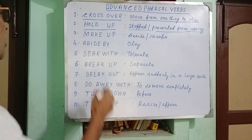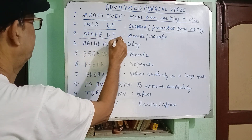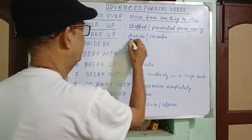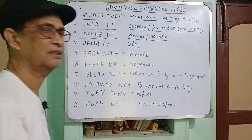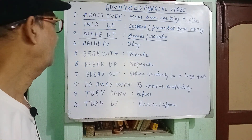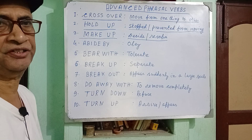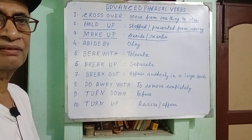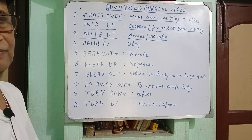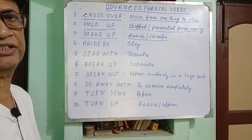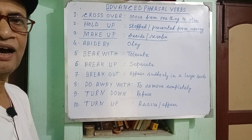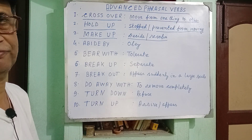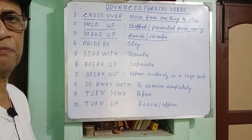The third example is 'make up.' Make up means to decide, resolve, or come to a conclusion. For example, 'I have made up my mind that I would study medicine.' Here, 'made up' is the past participle form of 'make up.'